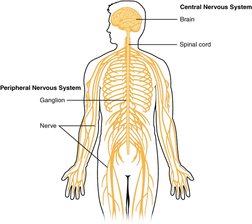The CNS of chordates differs from that of other animals in being placed dorsally in the body, above the gut and notochord or spine. The basic pattern of the CNS is highly conserved throughout the different species of vertebrates and during evolution. The major trend that can be observed is towards a progressive telencephalization — the telencephalon of reptiles is only an appendix to the large olfactory bulb, while in mammals it makes up most of the volume of the CNS. In the human brain, the telencephalon covers most of the diencephalon and the mesencephalon. The allometric study of brain size among different species shows a striking continuity from rats to whales, and allows us to complete the knowledge about the evolution of the CNS obtained through cranial endocasts.